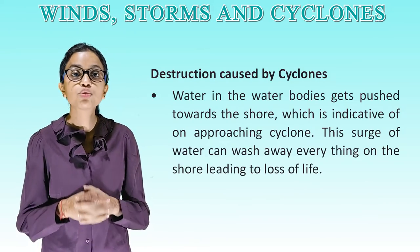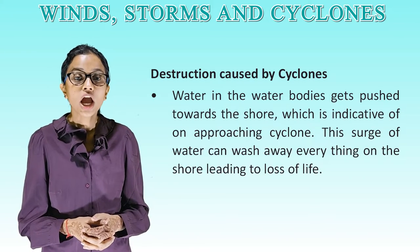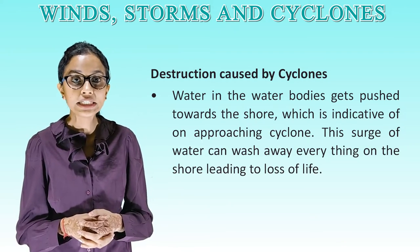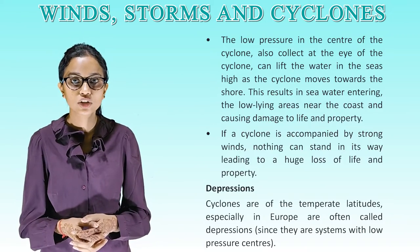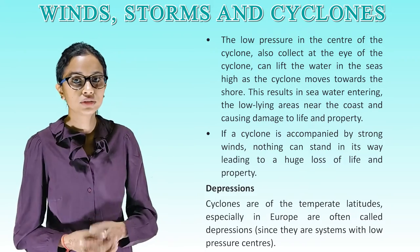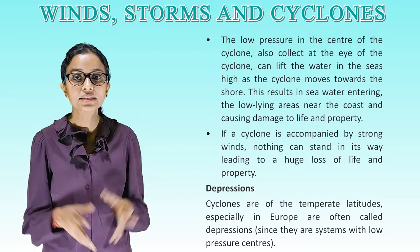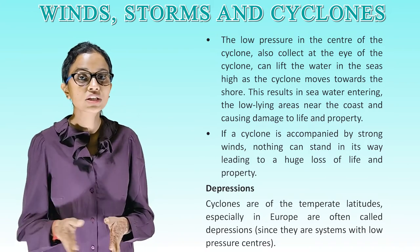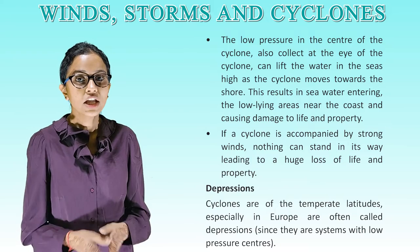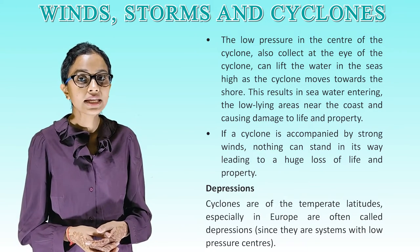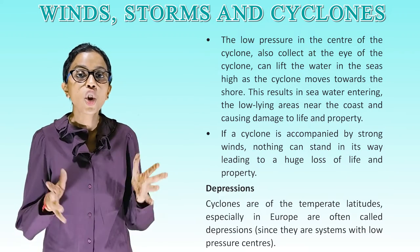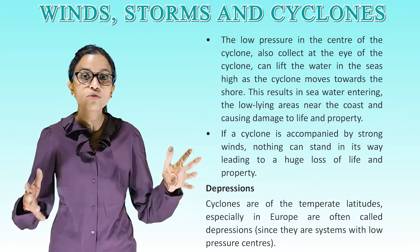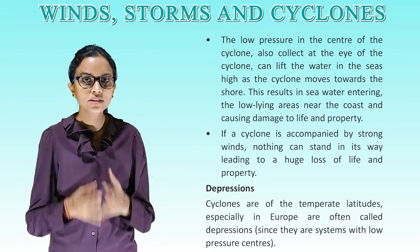The destruction caused by cyclones: Water in the water body gets pushed towards the shore, which is indicative of an approaching cyclone. This surge of water can wash away everything on the shore, leading to loss of life. The low pressure at the eye of the cyclone can lift water in the seas high as the cyclone moves towards shore, causing seawater to enter low-lying areas near the coast and causing damage to life and property. If a cyclone is accompanied by strong winds, nothing can stand in its way, leading to huge loss of life and property. Cyclones in temperate latitudes, especially in Europe, are often called depressions — they have low pressure centers, winds are not very violent, and they are mainly associated with rain.